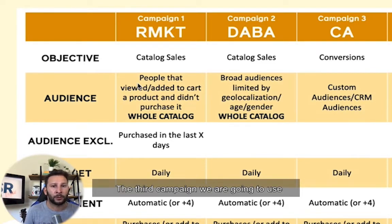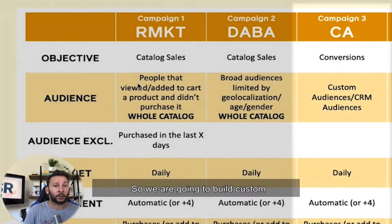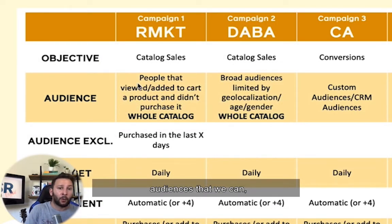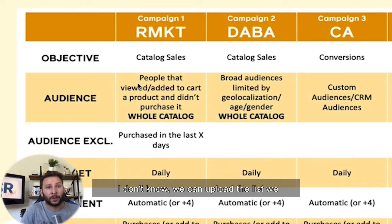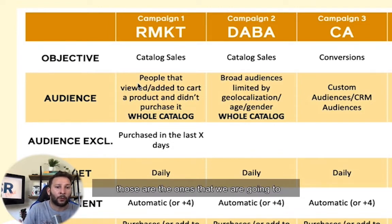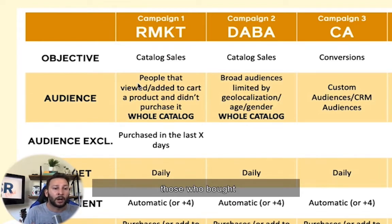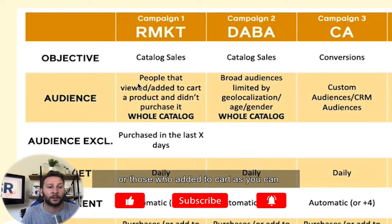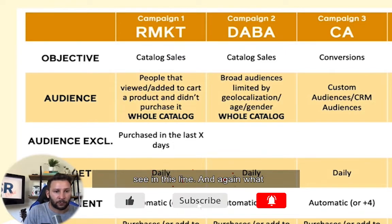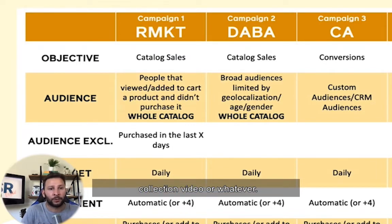The third campaign we are going to use is a conversions campaign for remarketing. We are going to build custom audiences — we can upload a list, we can choose those who have visited our website, we can choose different warm audiences, and those are the ones we are going to target. Something that is a common denominator for all these campaigns is to exclude those who bought or those who added to cart. And again, what we're going to show is a carousel — it can be with or without a catalog, a collection, video, whatever.